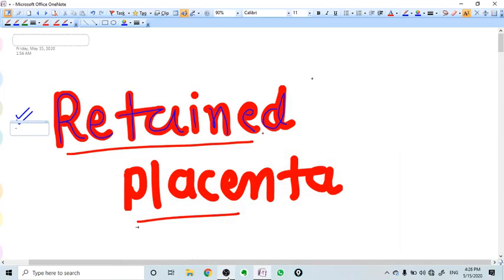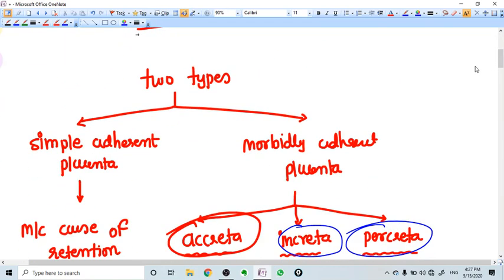In this video we are going to talk about retained placenta. There are two types of retained placenta available. First one is simple adherent placenta, that means the placenta is adhered to the uterus because of uterine contractions.